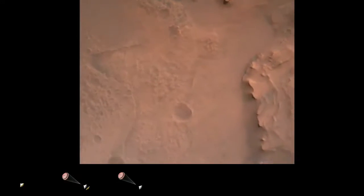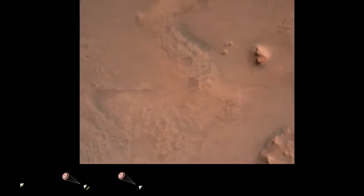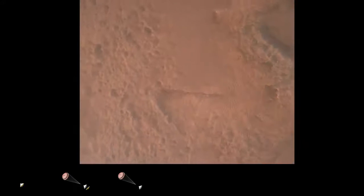Perseverance is continuing to descend on the parachute. We are coming upon the initialization of terrain relative navigation and, subsequently, the priming of the landing engines. Our current velocity is about 90 meters per second at an altitude of 4.2 kilometers.